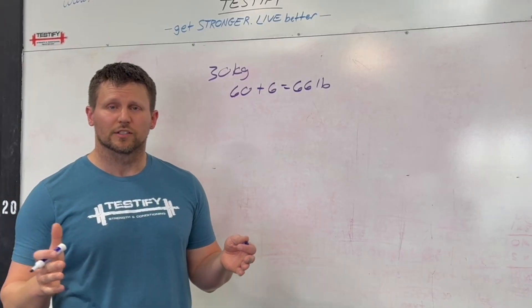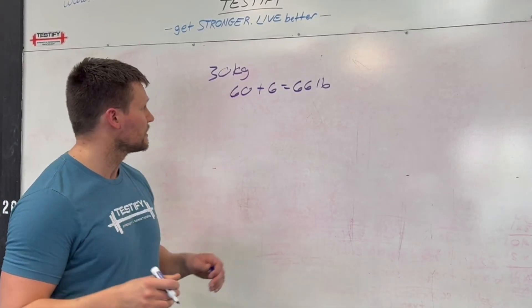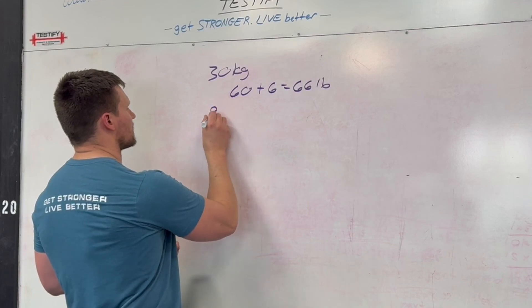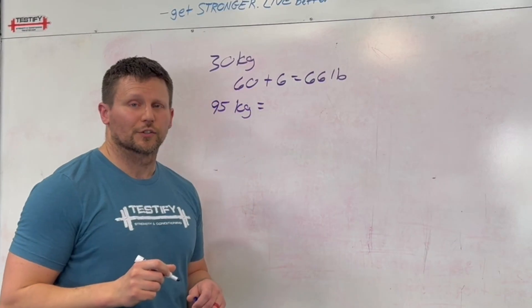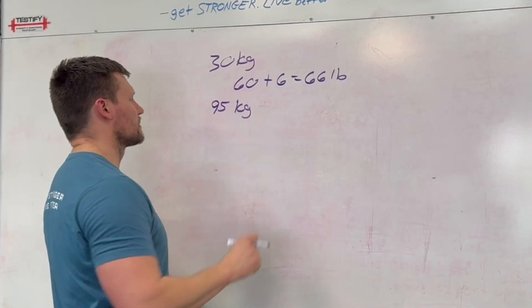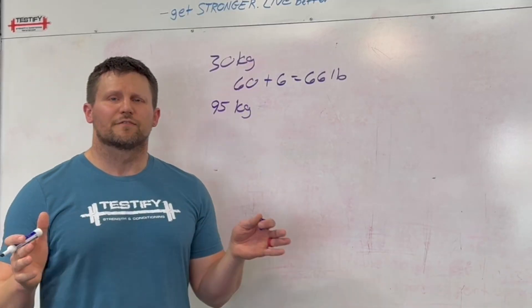Now to be fair, that was kind of an easy one. Let's choose one that's a little bit more difficult. Let's do 95 kilograms. We're going to do the same process, ignore the little equal sign right there. We'll do it below again.